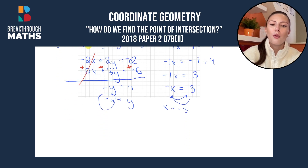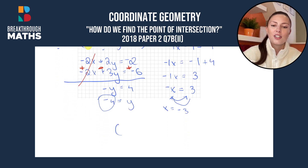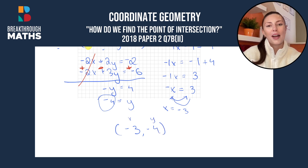This means the point of intersection is (-3, -4), because x comes first and y comes second.